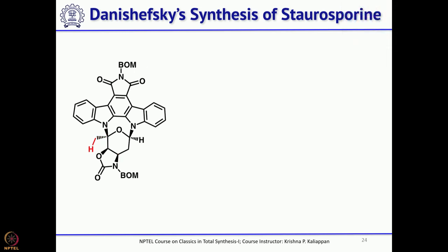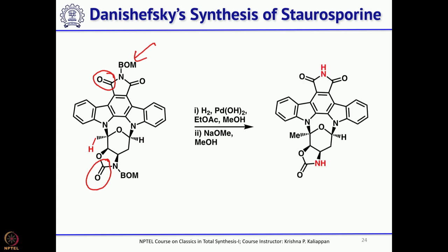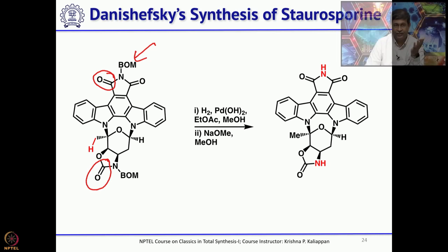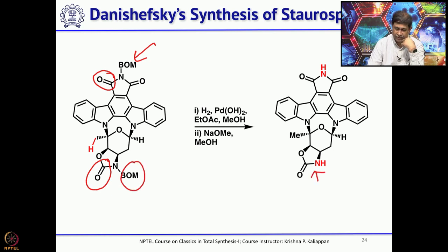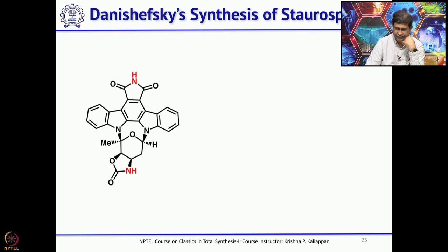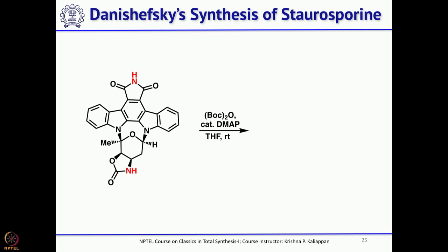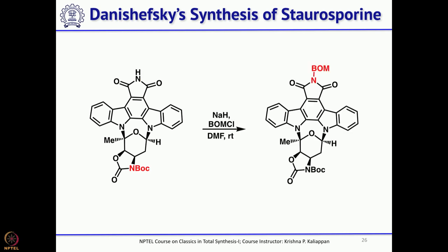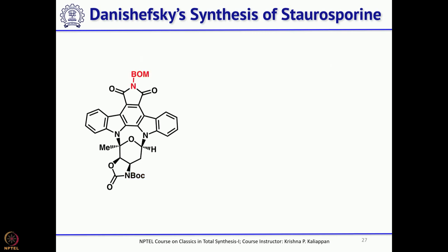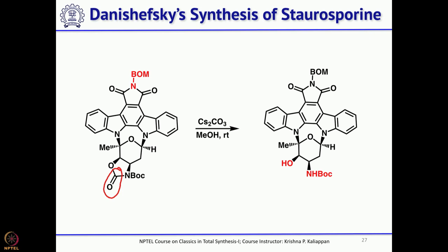Now you have to remove the carbonyl group, one of the carbonyls, and cleave the BOM group to complete the total synthesis of staurosporine. First hydrogenolysis removes both BOM groups to give the carbamate and the maleimide. Then selectively protect the maleimide nitrogen as N-BOM by treating with sodium hydride and benzoyloxymethyl chloride. Then the carbonyl group is cleaved by treating with cesium carbonate and methanol to give an amino alcohol with the amine protected as BOC.